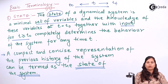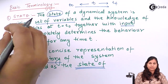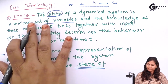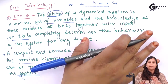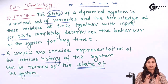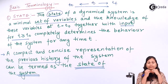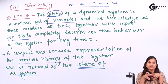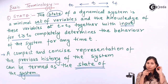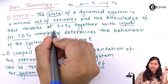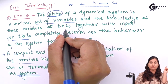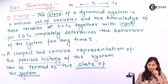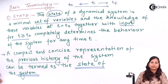The state of a dynamical system is a minimal set of variables — the minimum set of variables which are essential for defining the behavior of the system. The knowledge of these variables at T equals T0 together with the input for T greater than or equal to T0 defines the state of the system.